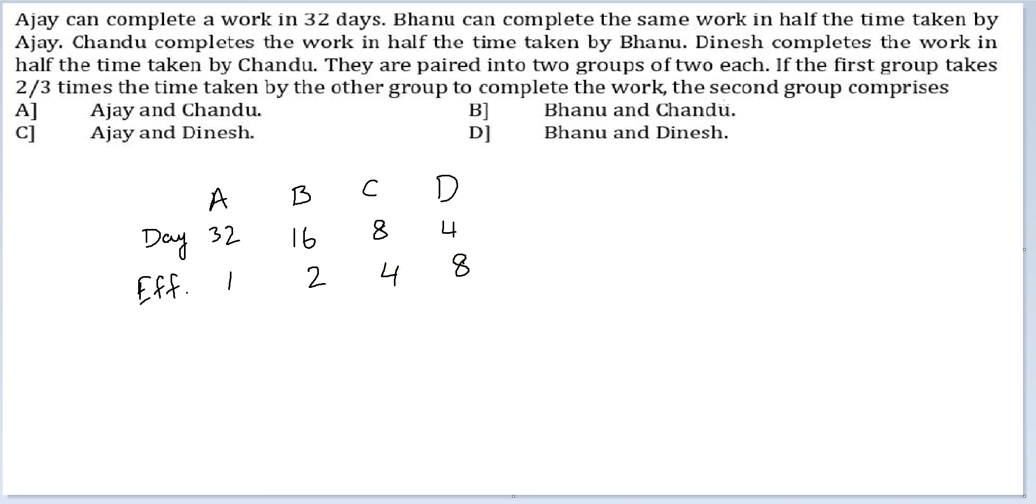Now I have been told they are paired into two groups. The first group takes 2/3 the time. If the first group takes 2/3 the time, I have to break up ABCD into two groups. One group has to take 2/3 the time or has to be 3/2 times as efficient as the other group. I have to break up these numbers into efficiency in the ratio of 3 is to 2.